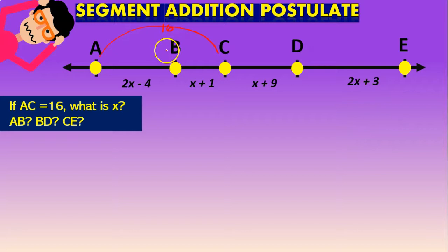So in this case guys, they tell us that AC has a value of 16. And they ask us, what is the value of x? What is the length of AB, BD, and CE? Okay, let's try doing that.